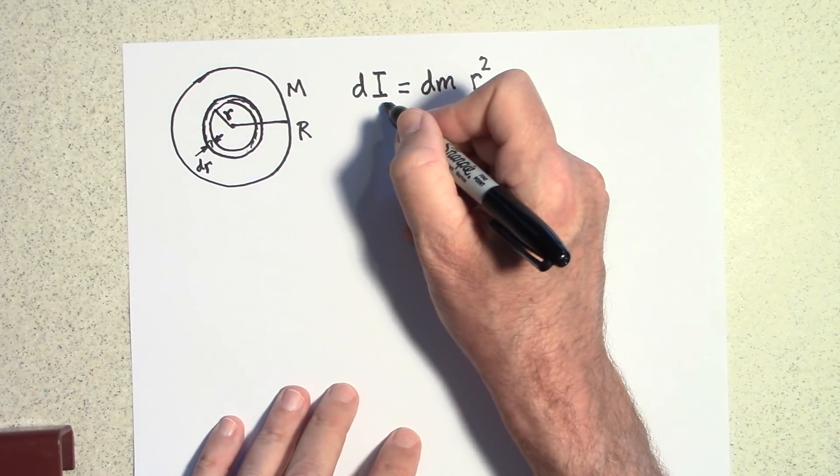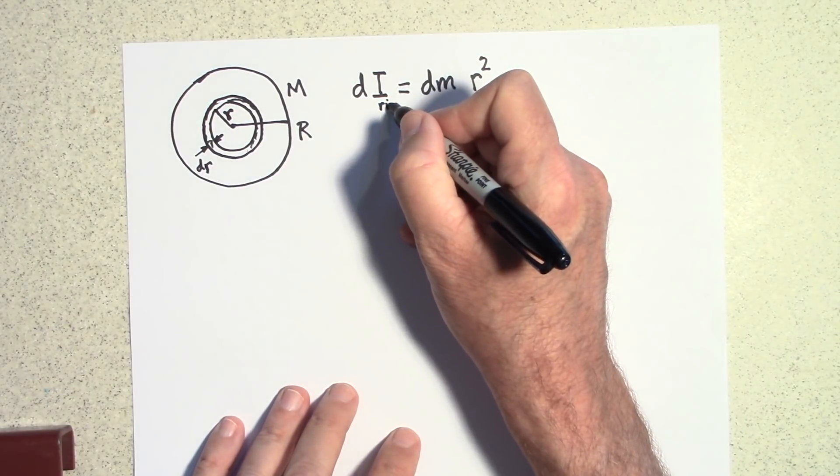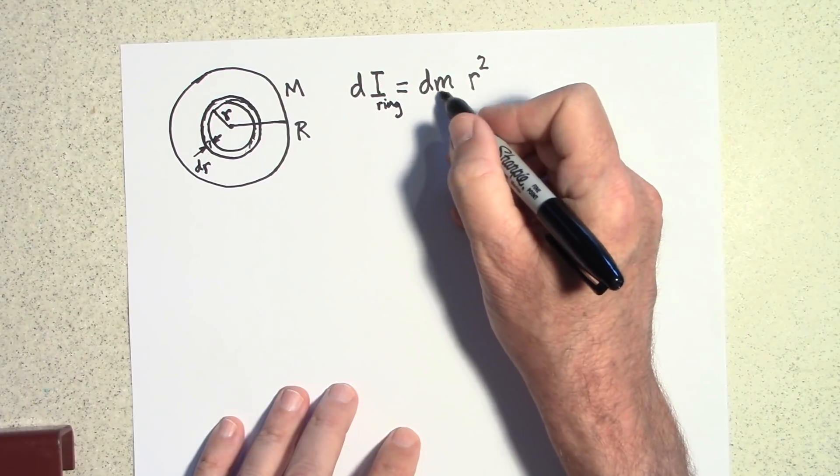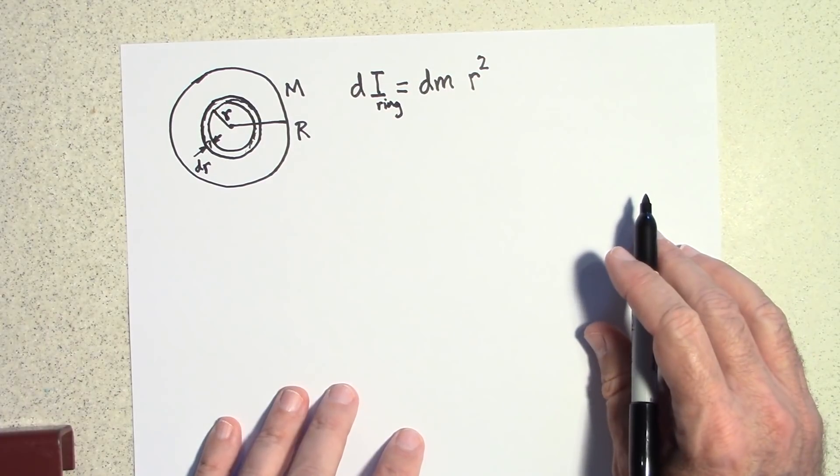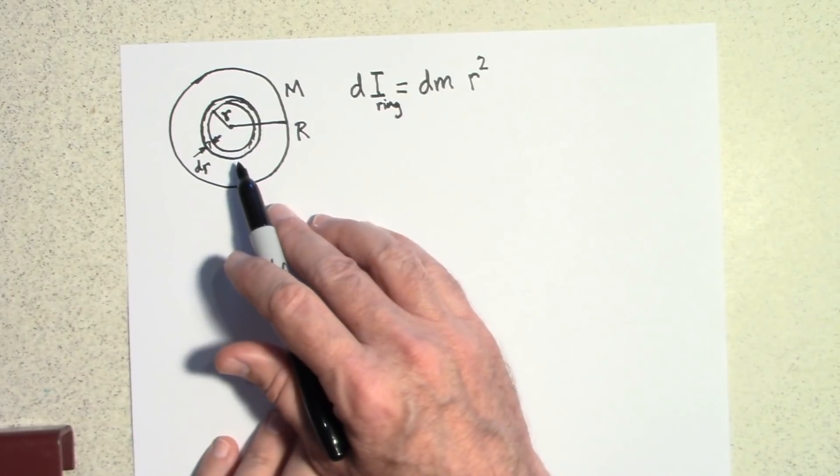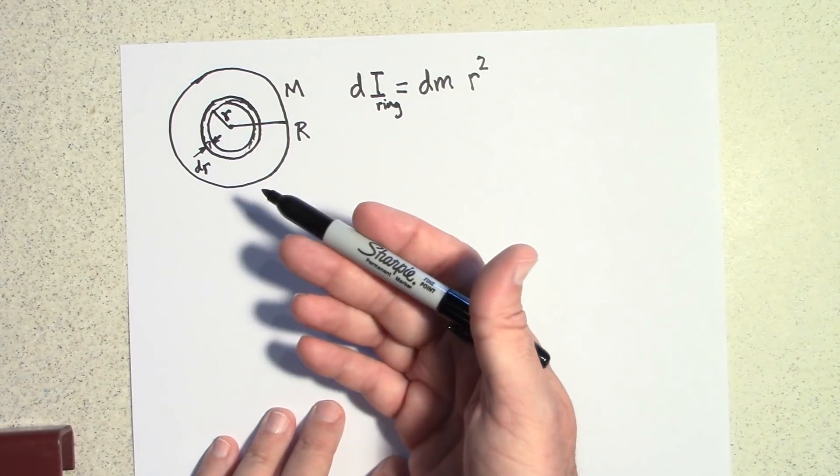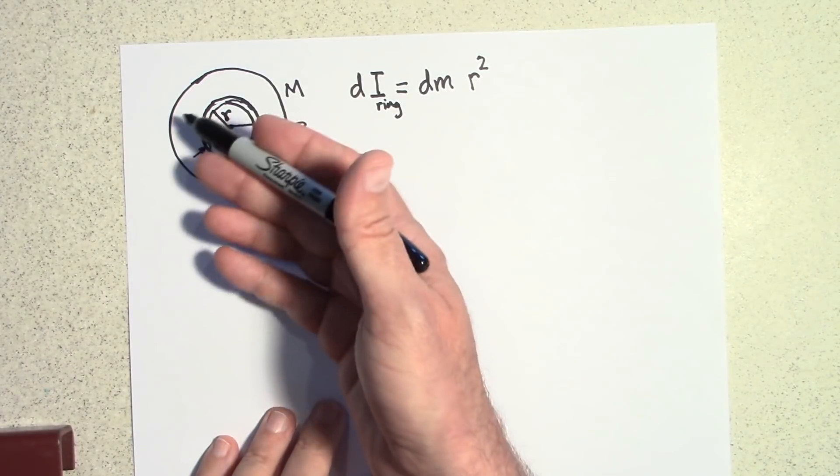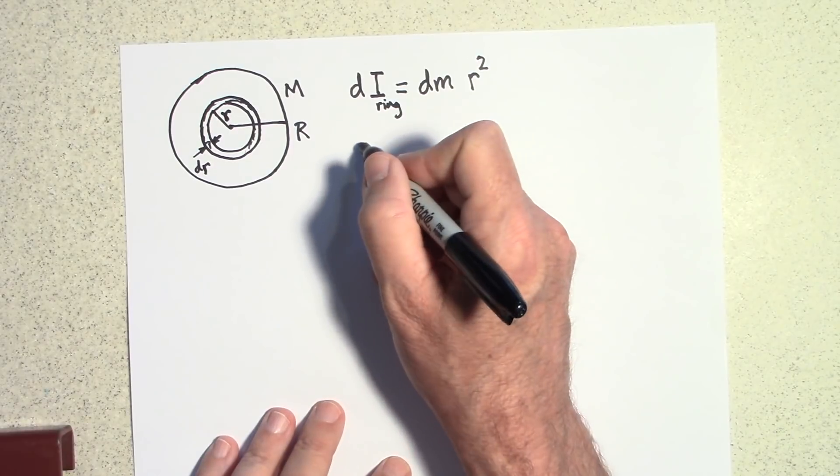Okay, so this is the i of the ring. I'm going to say i sub ring and that's the dm. This is the dm of the ring. Okay, now I don't want to know the rotational inertia of the ring. I want to know the rotational inertia of the entire disc. And so the i of the disc, that's going to be just the sum of all the i's of the ring.